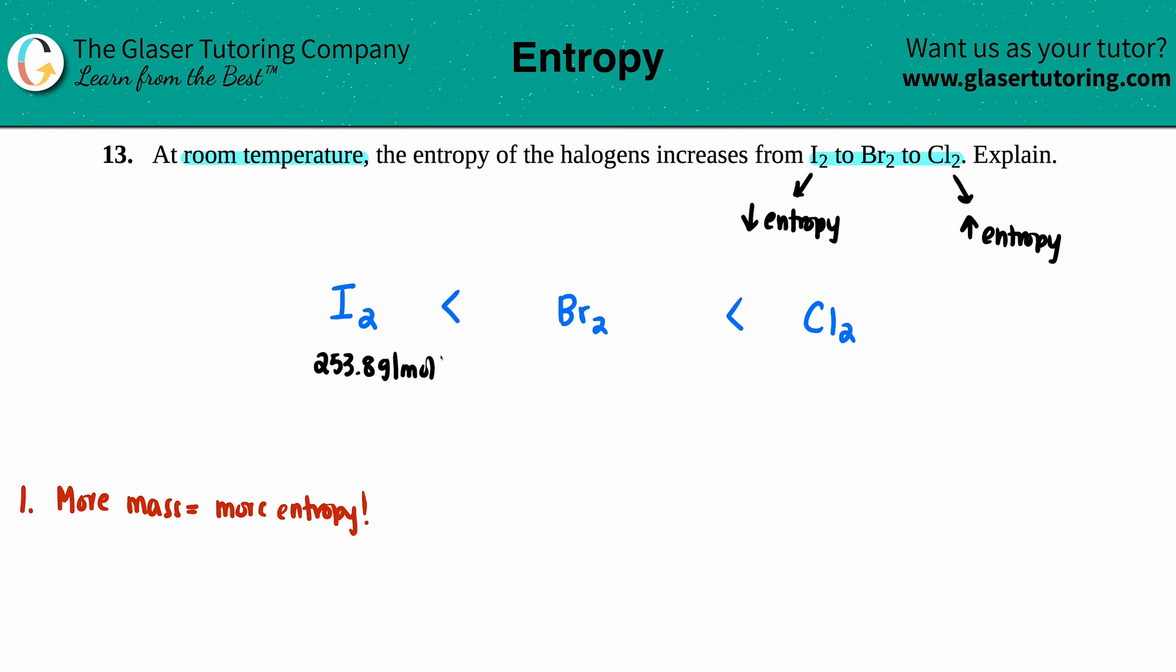Br₂ is 79.9 times two, so 159... uh-oh, I don't like this already. And Cl₂ is 35.45 times two, which is 70.9 grams per mole. Now if we were following the mass reasoning, more mass more entropy, I₂ should be the largest. The sign should be flipped if we were going by mass.